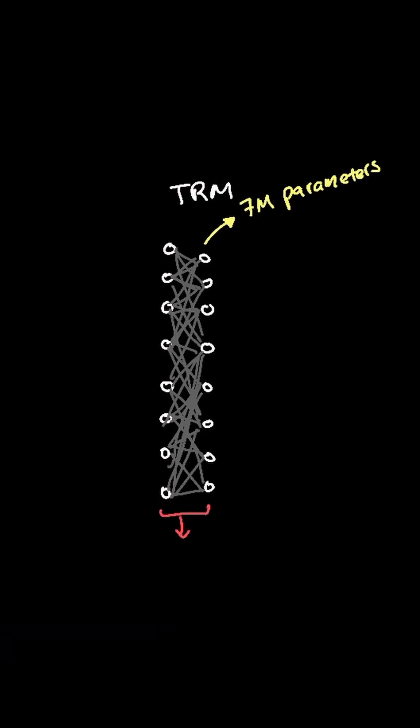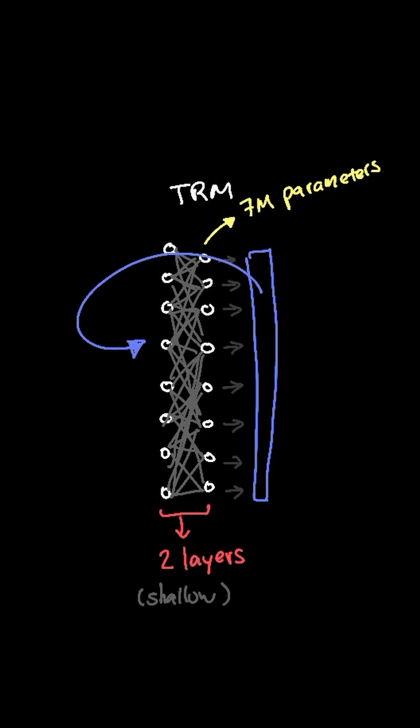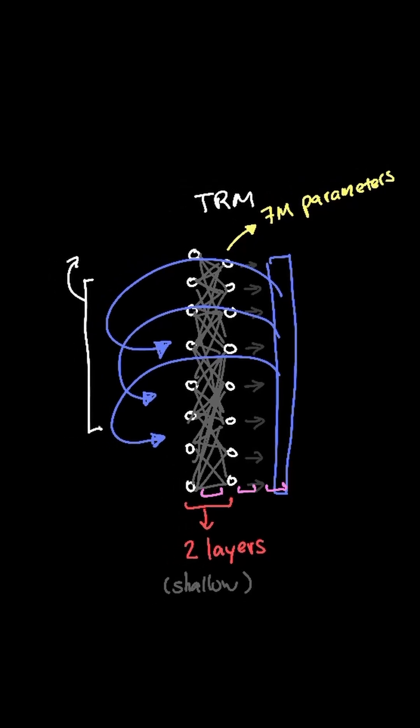TRM is a 7 million parameter model with only two layers. And since it's a shallow network, it recursively reapplies the same two-layer network to improve its depth, where the output from one iteration is fed back as input for the next. And this type of recursion is why TRM stands for tiny recursive model.